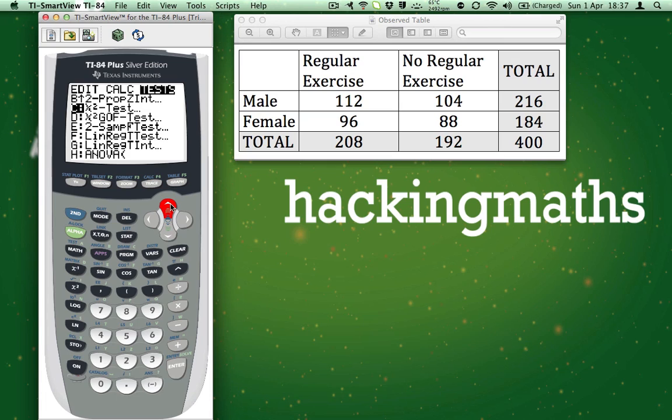Note, there is also a chi-squared GOF test. You do not want to use that, so just highlight chi-squared like I have done, and then press Enter.